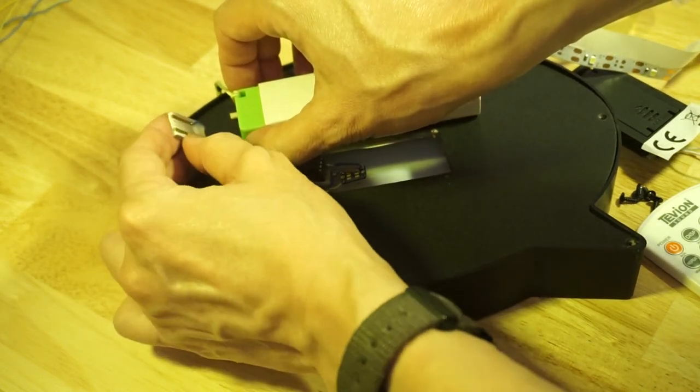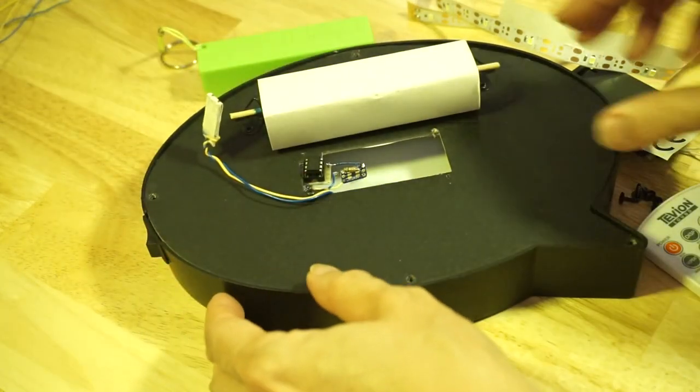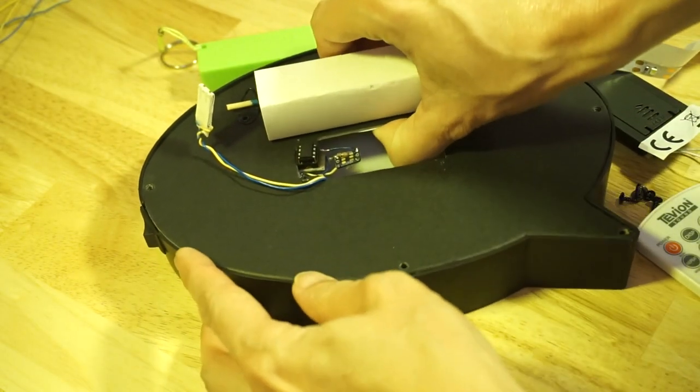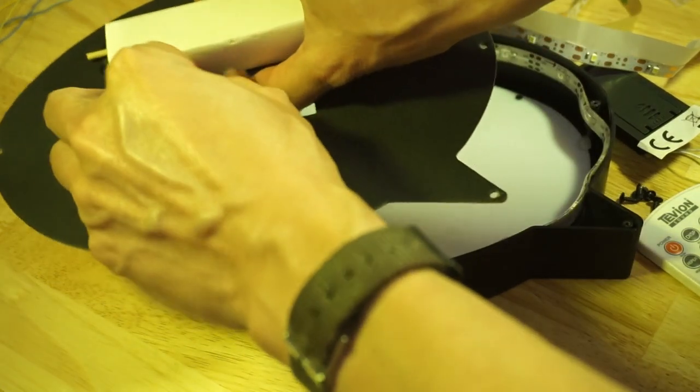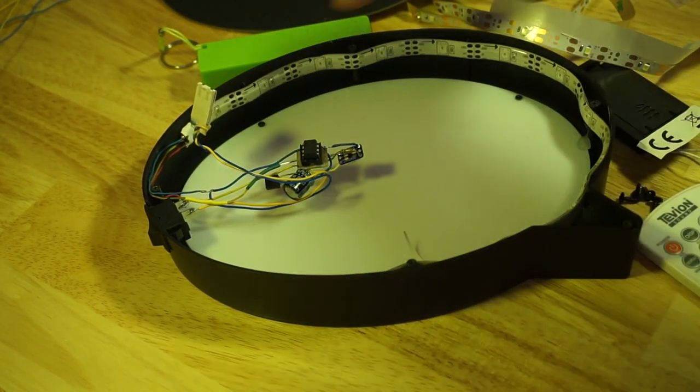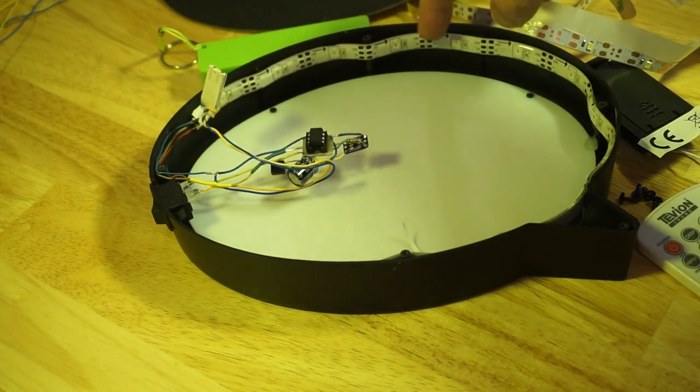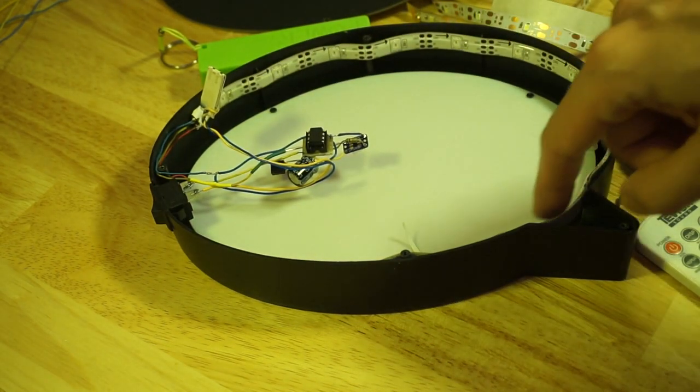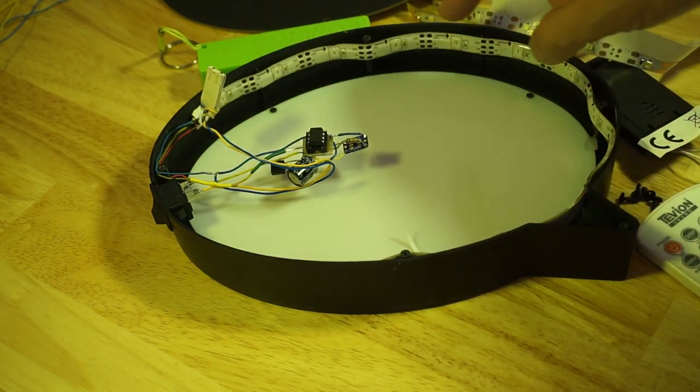Again, this is just a piece of cardboard and two strips of copper. And there you have it. So this is the WS2812 strip, NeoPixel strip. It has 15 RGB LEDs.